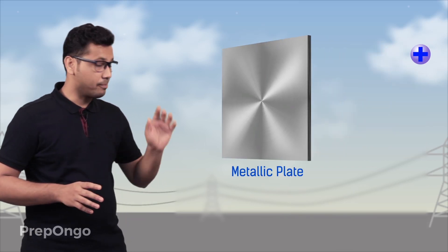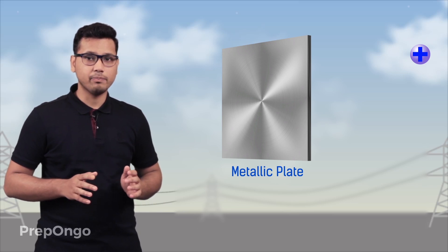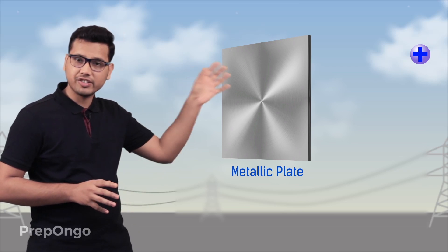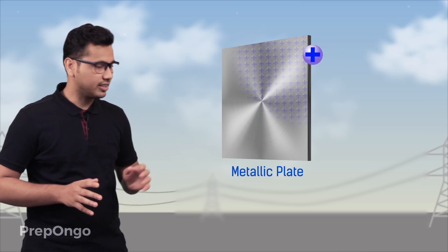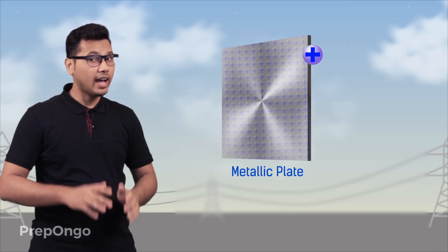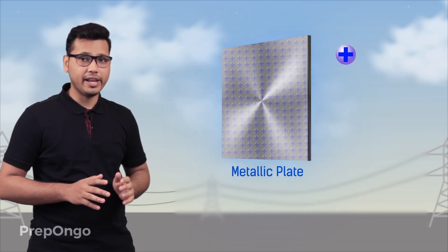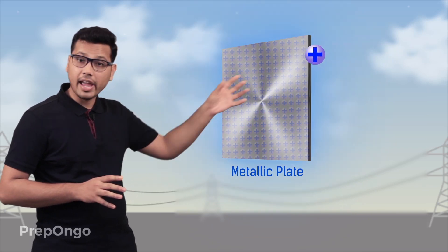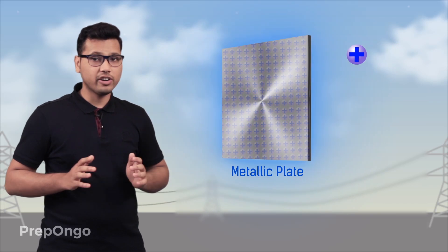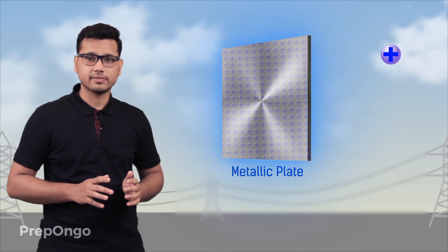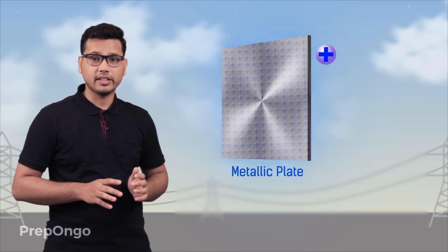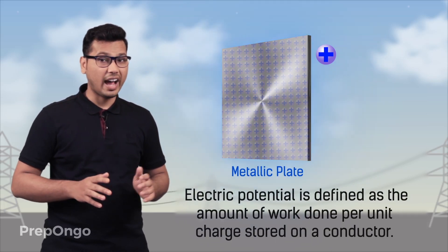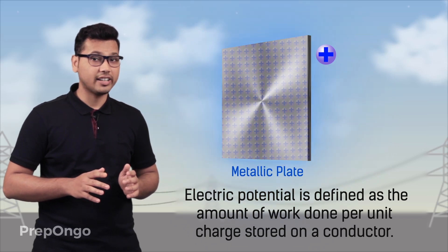Now we have one more way to understand electric potential. Let us imagine a metallic plate and we want to charge it by accumulating positively charged particles. We bring positively charged particles and drop them on this plate. When the plate was neutral, it is very easy and very little work is required. But as charge accumulates on the metallic plate, more and more repulsion will be faced by the incoming charged particles, and more work will be required to drop the charged particles on this plate. The total amount of work done to accumulate a certain amount of charge on this plate is termed as electric potential.